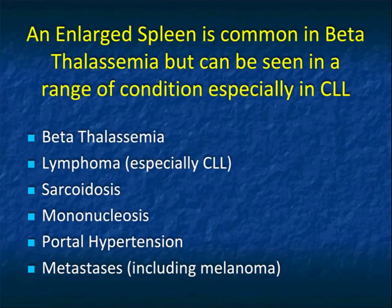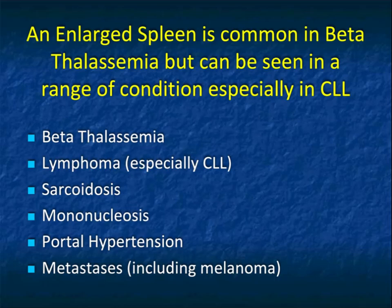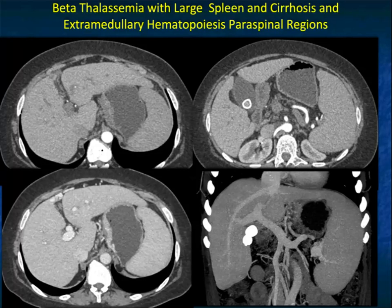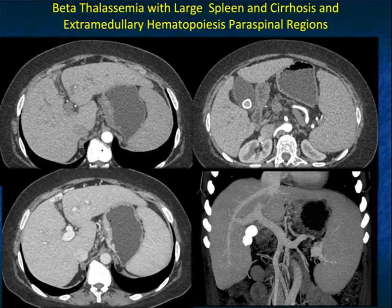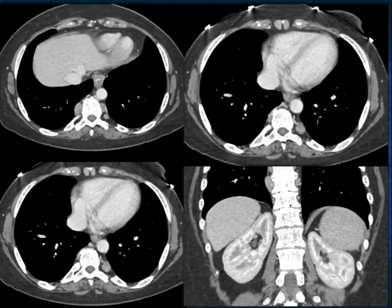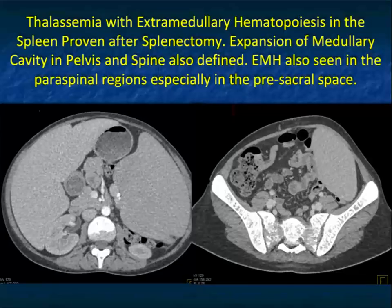An enlarged spleen is common in beta thalassemia but can be seen in many conditions. CLL gives the largest spleen. Large spleens can be seen in sarcoid (often with focal lesions), mononucleosis (humongous spleen in younger patients, can spontaneously bleed), portal hypertension (with varices and liver changes), and lymphoma/metastases. Here's a great case of beta thalassemia with a large spleen, cirrhosis of the liver, and extramedullary hematopoiesis in the paraspinal regions. This patient had a splenectomy confirming extramedullary hematopoiesis within the spleen, shown at multiple sites on follow-up images.